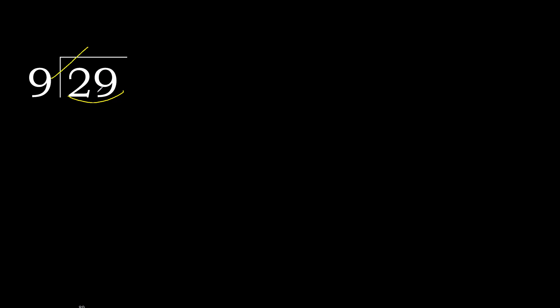29 divided by 9. 2 is less, therefore next. 29 is not less, therefore with 29 — 9 multiplied by which number is nearest to 29 but not greater?